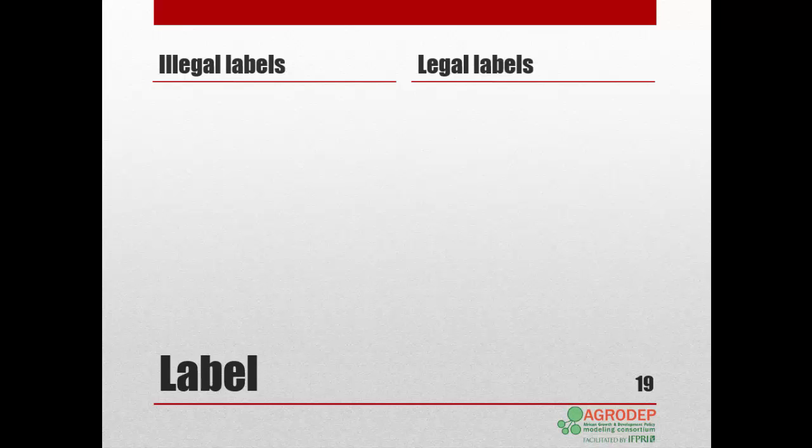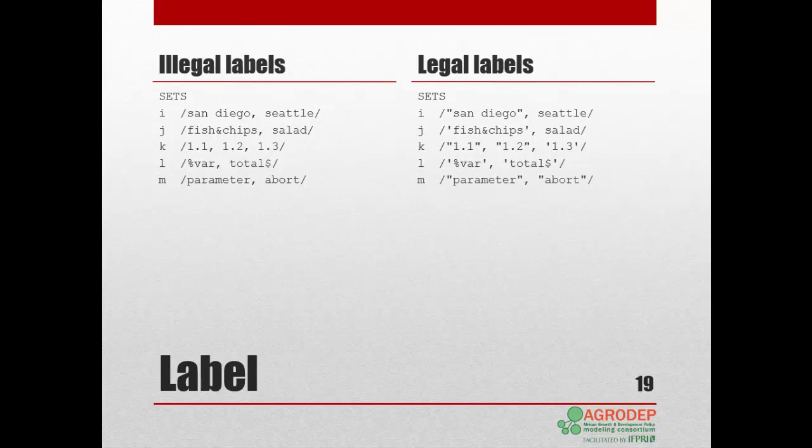These are examples of illegal labels and how to write them correctly. On the left, we have listed sets using illegal labels, and on the right, we show the correct writing. In the first example, San Diego has an illegal space. One way to write the label correctly is to put the name between quotes. Another way, as we saw in Lesson 2, is to put a hyphen. In the second example, the ampersand in Fish and Chips is illegal. We use again quotes. You can use single or double quotes as long as the opening and closing quotes match. The last example uses GAMS reserved words. We also use quotes to make them legal.